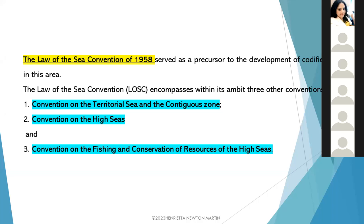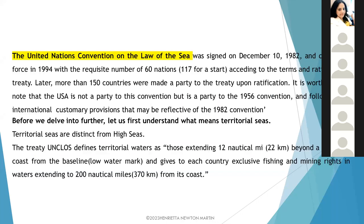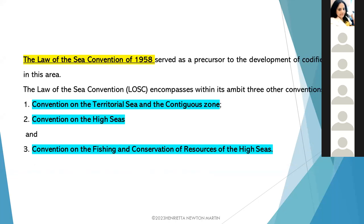A student answers the question on the two basic conventions of International Law of the Sea: there are two conventions — one taken in 1958 and one in 1982. The instructor confirms this is correct and asks about the three sub-conventions under 1958. The student responds: Convention on the Territorial Sea and the Contiguous Zone, Convention on the High Seas, and Convention on Conservation Resources of the High Seas. The instructor confirms and proceeds to explain via a diagram for the next class.